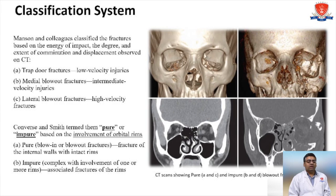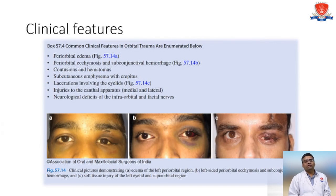Classification was already discussed — Manson and colleagues classified fractures based on the type of bone, velocity, and involvement or non-involvement of the rim, pure and impure. Clinical features of orbital floor fracture include: periorbital edema, periorbital ecchymosis, subconjunctival hemorrhage, contusion hematoma, subcutaneous emphysema with crepitus, laceration involving the eyelid, injuries to the canthal apparatus, and neurological deficiency of the infraorbital and facial nerves.